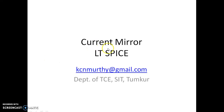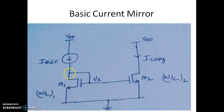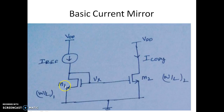In this video we shall see the current mirror circuits using LTSpice. We are considering the basic current mirror circuit using NMOS as active devices. This is the current source i-reference, and M1 transistor with drain connected to gate, and M2 transistor. We are trying to have a copy of the current i-reference on i-copy. As we know, i-copy depends on i-reference and the W-by-L ratio of M1 and M2.